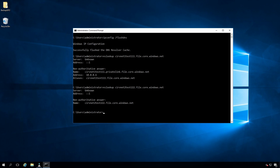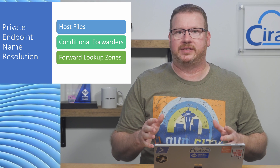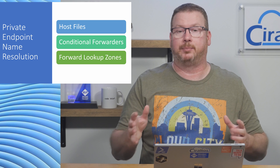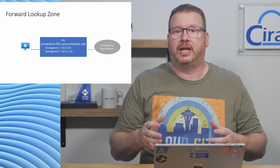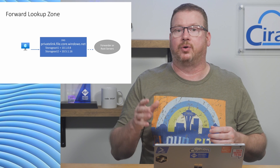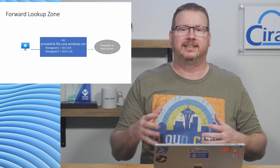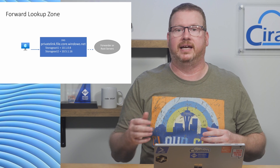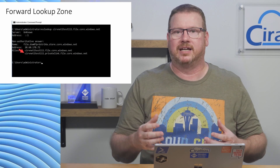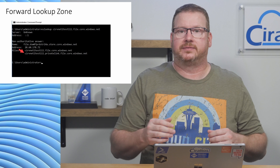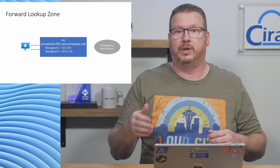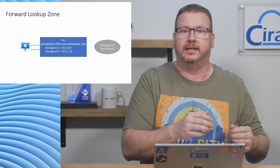But what if we need to access the private endpoint from another VNet, or from an on-premises server over VPN or ExpressRoute? In that case we're left with forward lookup zones. A forward lookup zone is simply a zone that the DNS server — the domain controller in this example — has authority for. We'll create a new zone for the privatelink.file.core.windows.net domain and add our private endpoints to it. Remember the alias that came back when we ran nslookup — the storage account name dot privatelink.file.core.windows.net — this is where that's important.